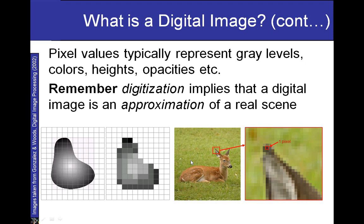Digitization implies that a digital image is just an approximation of a real scene. For example, depending upon the resolution of the image, an element in the real scene may appear differently. Topics like quantization and resolution will be covered in our next lecture. For now, we just focus on the fact that a digital image is an approximation of a real scene, converting real-world analog signals into digital signals.